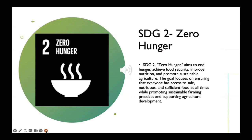SDG number two: Zero Hunger, focused on achieving food security, improving nutrition, and promoting sustainable agriculture. The goal aims to ensure that all people have access to safe, nutritious, and sufficient food at all times. It addresses the challenge of hunger, malnutrition, and food insecurity affecting millions worldwide. SDG 2 seeks to end all forms of hunger and malnutrition, including stunting and wasting in children, and ensure everyone has access to a healthy and sustainable diet. It emphasizes sustainable agricultural practices, resilient food production systems, and increased investment in rural development, promoting sustainable farming methods, improvement of agricultural productivity, strengthening of food value chains, and enhancement of agricultural infrastructure and technology.